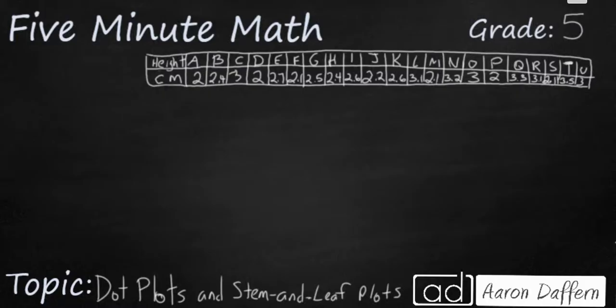So you might come across a table like this where you have a lot of information. In this case we have the height of 21 plants ranging from plant A all the way to plant U, represented in centimeters, but the data is kind of messy. So we're going to first look to see how we could represent this data and make it a little bit easier to read with dot plots.